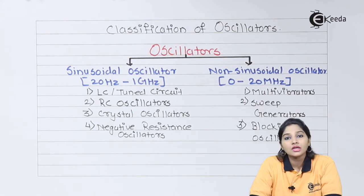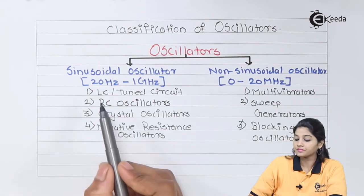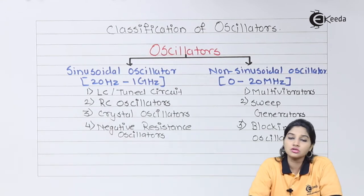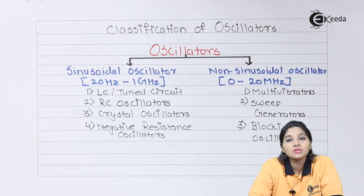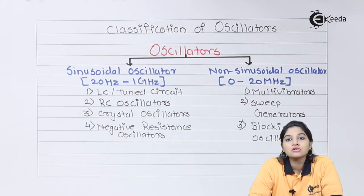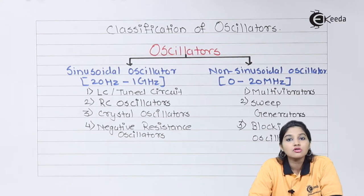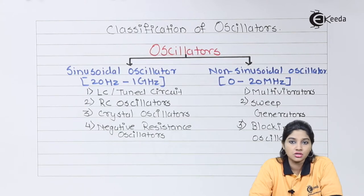Sinusoidal oscillators are further classified into four types. The first is the LC tuned circuit oscillator. As the name indicates, it consists of an inductor and capacitor for constructing the oscillation circuit. These oscillators are used to provide high-frequency signals and are also called radio frequency oscillators. Hartley, Colpitts, and CLAP oscillators are examples of LC or tuned circuit oscillators.